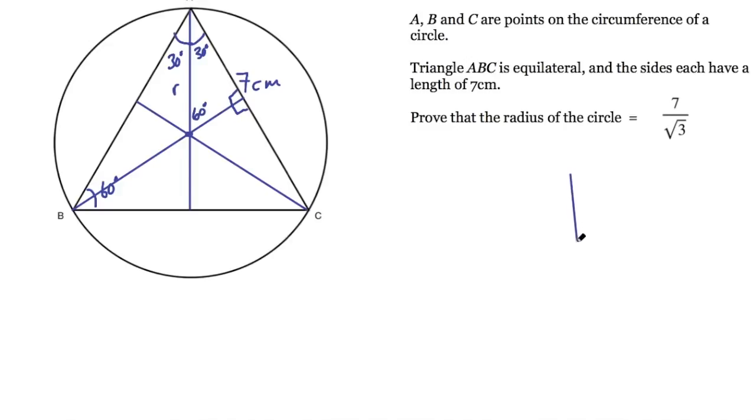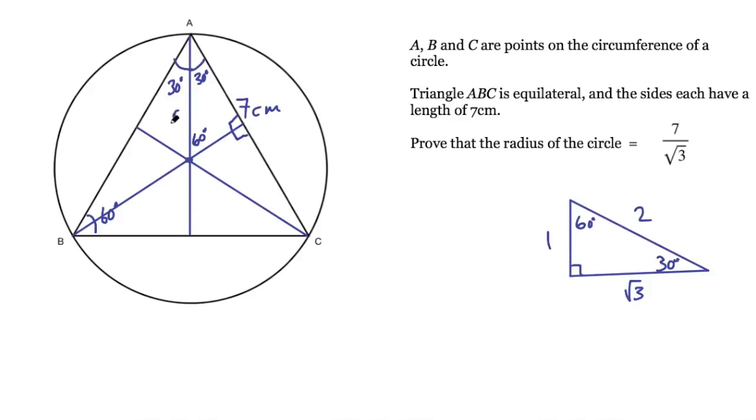If I draw a quick right angle triangle down here with angles of 30 and 60, the ratio of the sides of this triangle are 1 to 2 to root 3. This is commonly used in trigonometry when talking about sine and cosine of angles. This can often be used in problems like this and will allow me to find the radius.